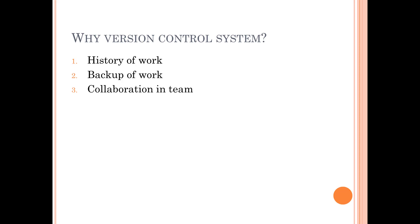So here I use the term 'versions.' A version means you are storing the changes you are making in your document — keeping a copy of your work at a particular time. Before the first review you had version one; after incorporating comments you had version two. When the manager asks for the original document back, you know you need version one. If you've stored different versions, you can achieve this; if not, you've lost your work.